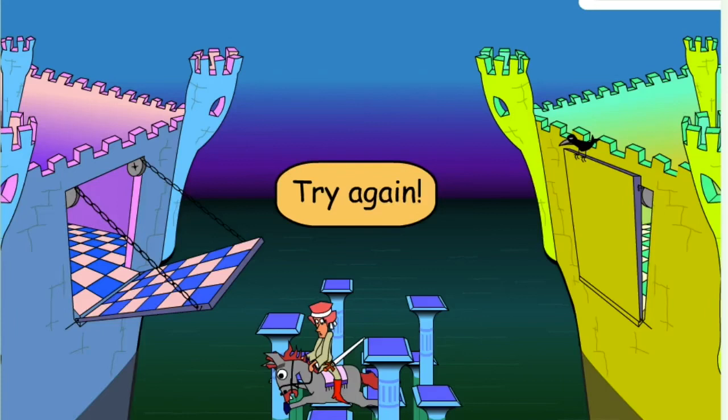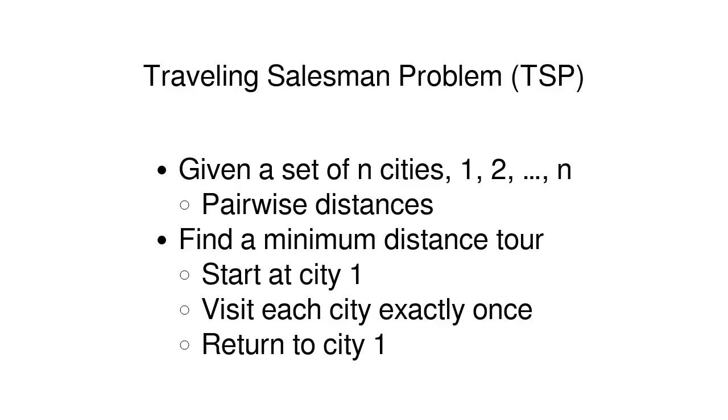No worries, I'll remind you. In the traveling salesman problem, TSP for short, we are given a set of n cities and a matrix of pairwise distances between them. The salesman's tour is supposed to start and end at the same city and should include one stop in each of the remaining cities. The objective is to minimize the total distance traveled.